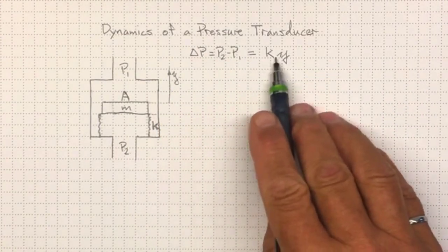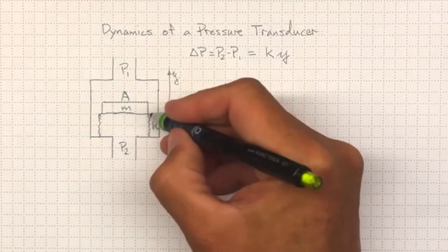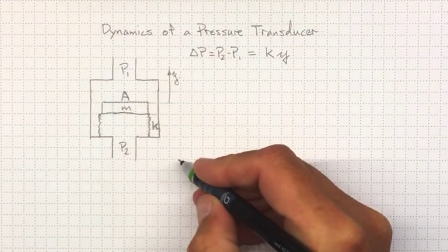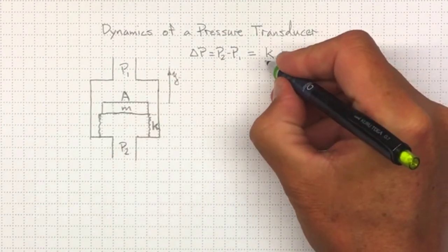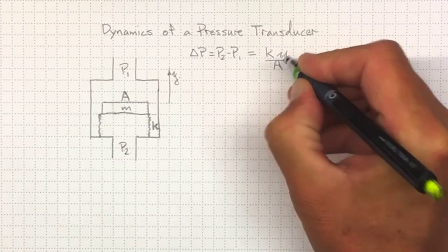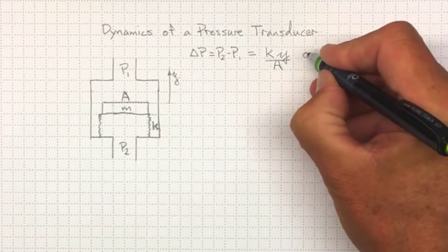So the force going downwards will be K times Y. The higher up it is, the more the spring force pulls down. And if we divide that by the area, then we'll get the pressure. So that's if we're in equilibrium.